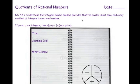If p and q are integers, then negative p divided by q is equal to negative p divided by q, which is also equal to p divided by negative q.